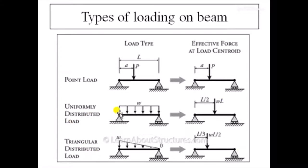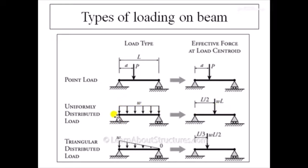The second type is the uniformly distributed load (UDL). A load of W kN per meter acts equally across the surface of the beam — the load at any point is the same as at the middle or the other edge. To convert UDL into an effective load, you take the product of the intensity W multiplied by the length L of the beam, giving W×L. This effective load acts exactly at the center of the UDL, that is at a distance of L/2 from either end.